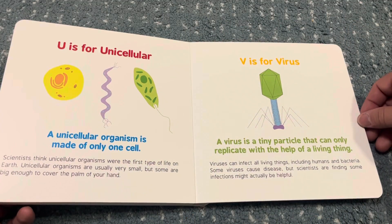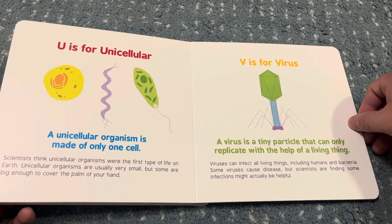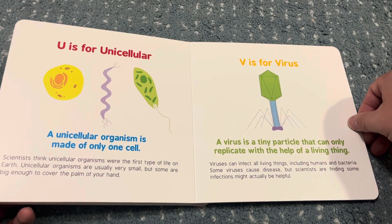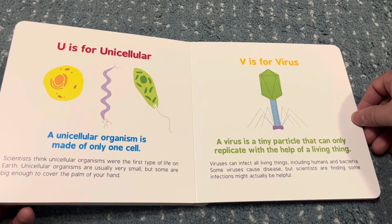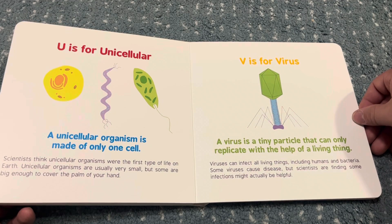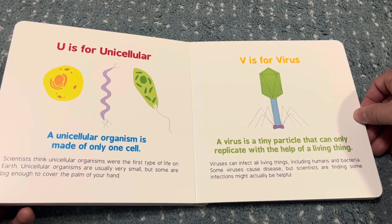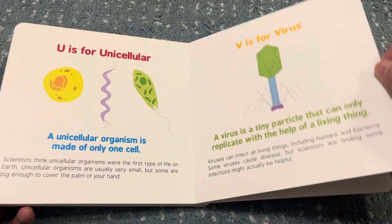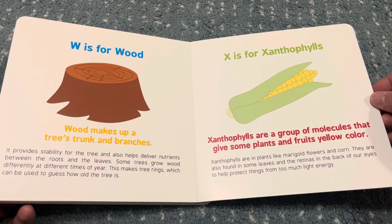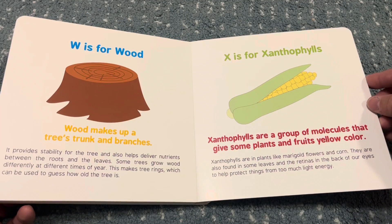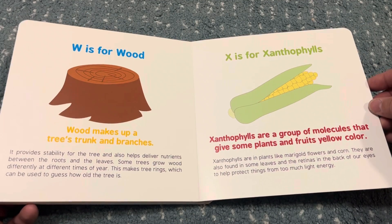U is for unicellular. A unicellular organism is made of only one cell. V is for virus. A virus is a tiny particle that can only replicate with the help of a living thing. W is for wood. Wood makes up a tree's trunk and branches.